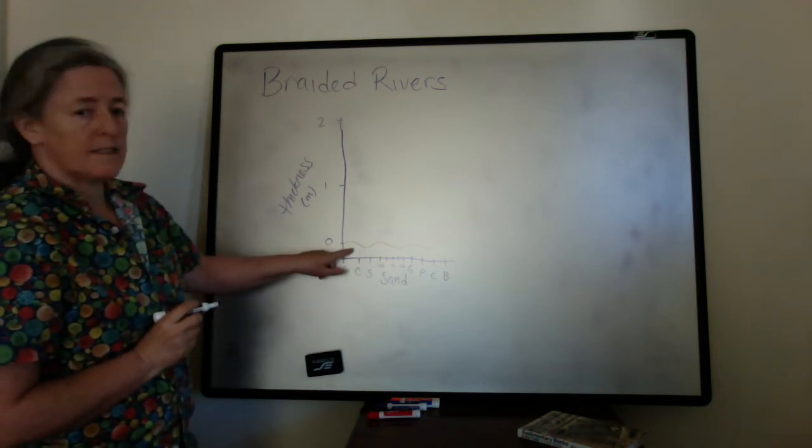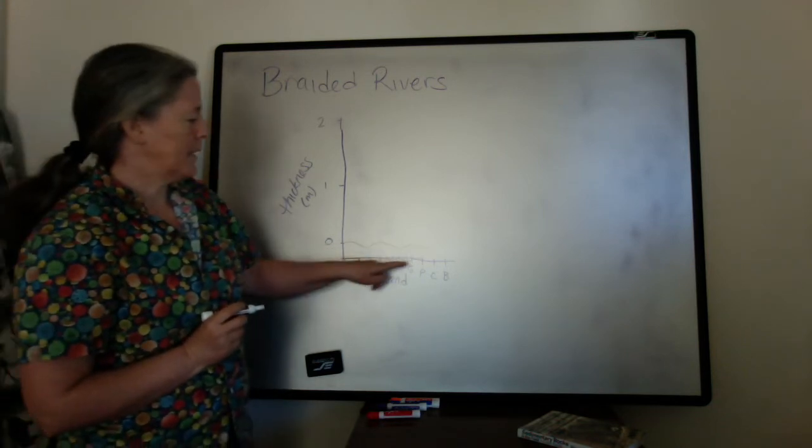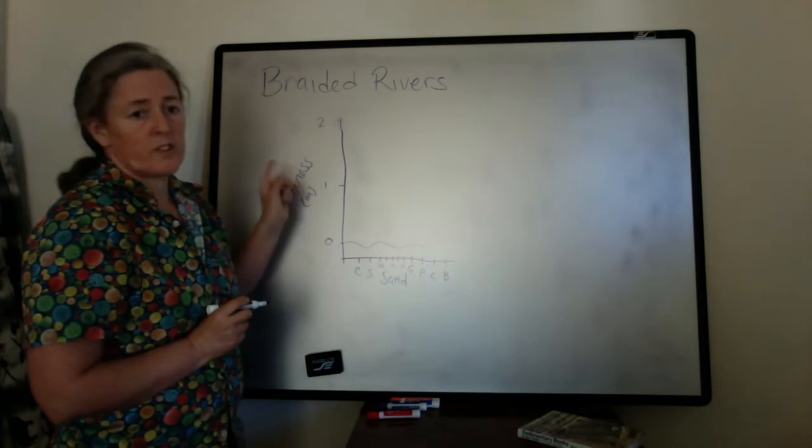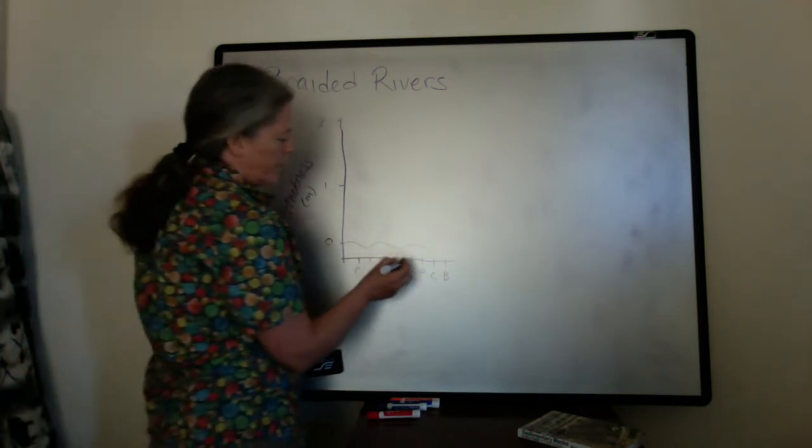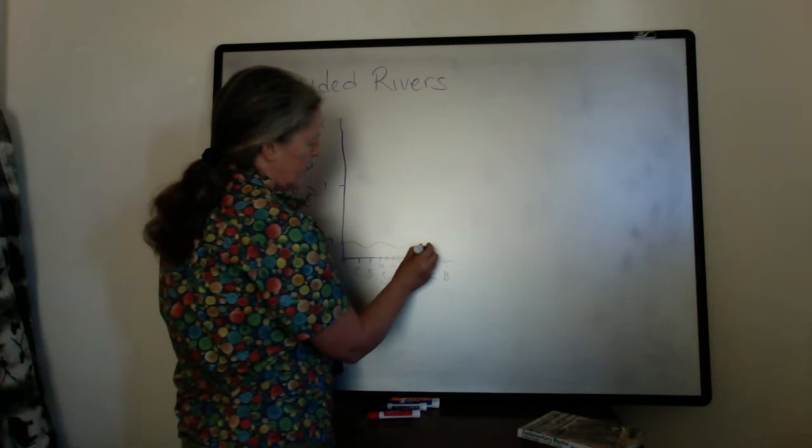And the coarsest grain sediments are at the bottom. And now the coarsest grain size that's in a braided river depends on the river itself. We'll make ours have cobbles here.